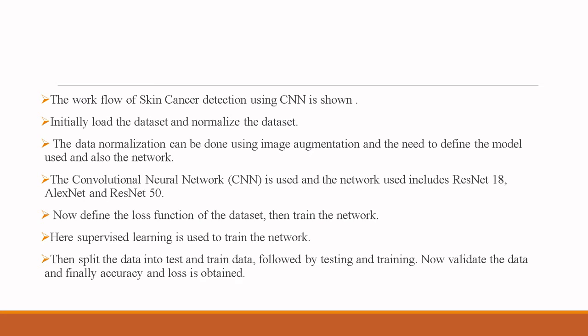Data normalization is done using image augmentation. We then define the model and network — the convolutional neural network — using ResNet-18, AlexNet, and ResNet-15 for skin cancer detection. The loss function is defined, and supervised learning is used to train the network with a pre-trained dataset. The data is split into training (80%) and testing/validation (20%) sets, and finally accuracy and loss are obtained.